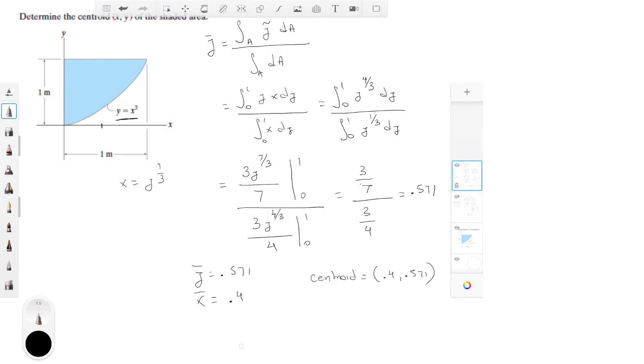So the centroid is at 0.4 in the x and 0.571 in the y. That will be in the x it will be a little bit less than half and a little bit over half. It will be right there. So final answer, final answer.